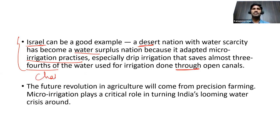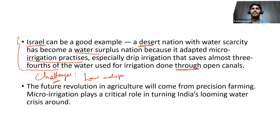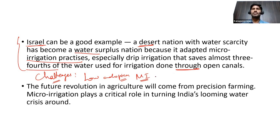Now the challenges in micro irrigation. The first and foremost problem is the low adoption of micro irrigation systems. The area covered under micro irrigation is still less than one percent. The main reason is the high cost involved — it requires huge initial infrastructure costs for establishing the network of pipes, tubes, and the irrigation systems.